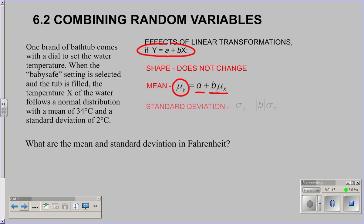For the standard deviation, keep in mind that standard deviations are affected by multiplications but not by additions. Notice we'll be multiplying by B, but not adding the A. We need those absolute value bars just in case B happens to be negative. So what are the mean and standard deviation in Fahrenheit?